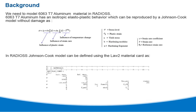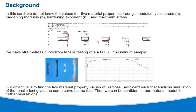In this example, we would like to model 6063 T7 aluminum in Radioss. 6063 aluminum has an isotropic elastoplastic behavior which can be reproduced by a Johnson-Cook model without damage. In Radioss, the Johnson-Cook model can be defined using a Law 2 material card. In this card, we do not know values for five material properties. However, we have a strain-stress curve from tensile testing of a 6063 T7 aluminum sample. Our objective is to find the five material property values of the Radioss Law 2 card.